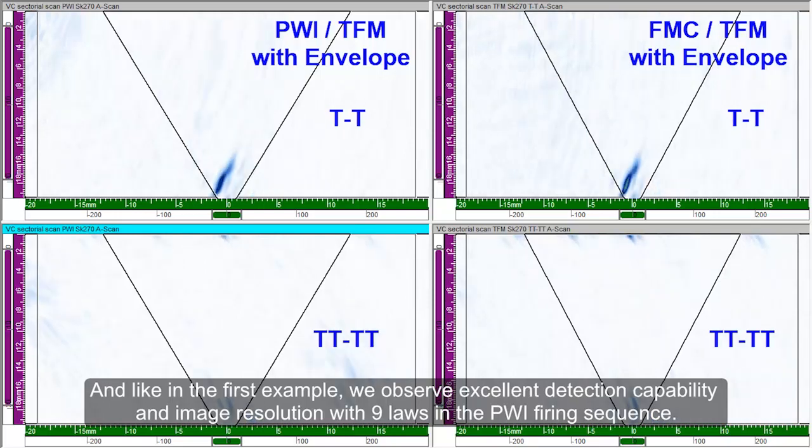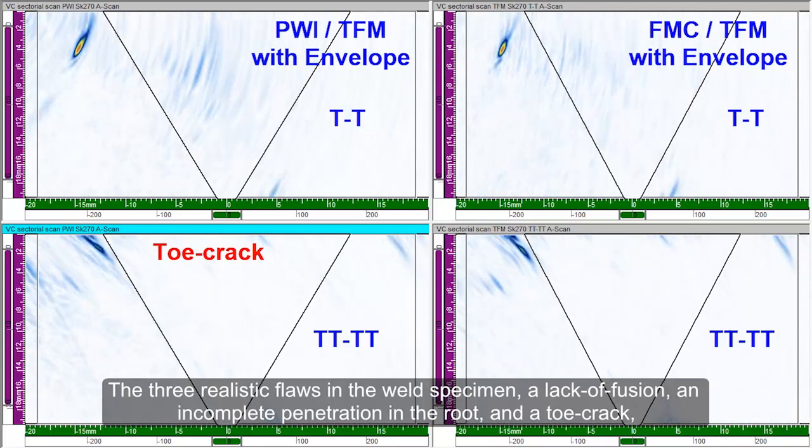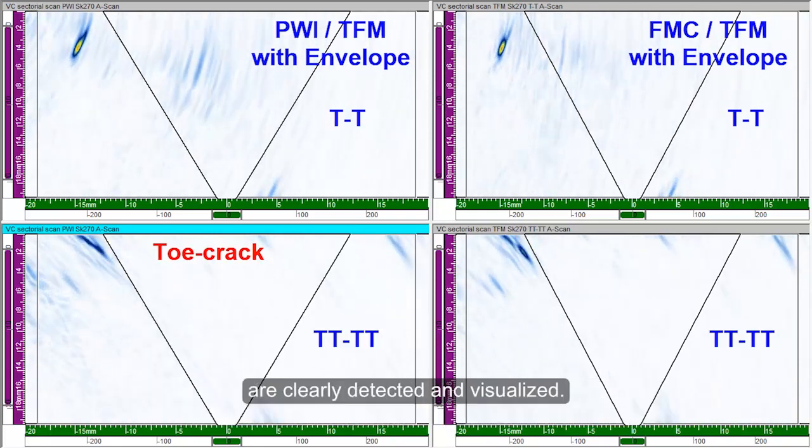And like in the first example, we observe excellent detection capability and image resolution with the 9 laws in the PWI firing sequence. The three realistic flaws in the weld specimen, a lack of fusion, an incomplete penetration in the root, and a toe crack are clearly detected and visualized.